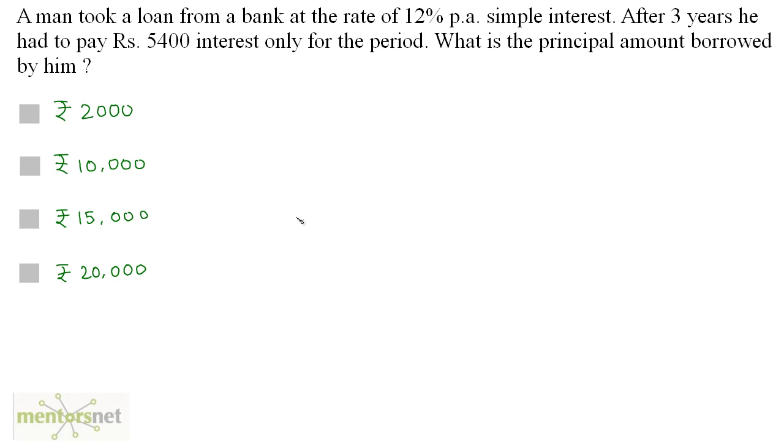A man took a loan from a bank at the rate of 12% per annum simple interest. After 3 years he had to pay Rs. 5400 interest only for the period. What is the principal amount borrowed by him? So you have been given the interest, that's 5400. So 5400 equals PNR upon 100.